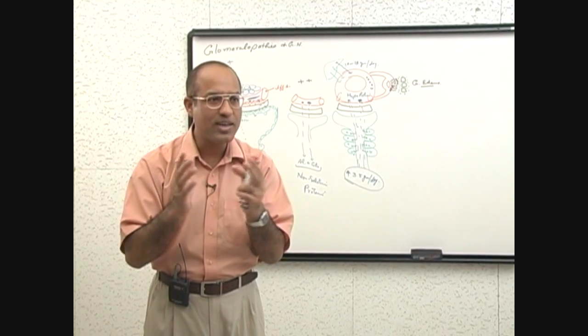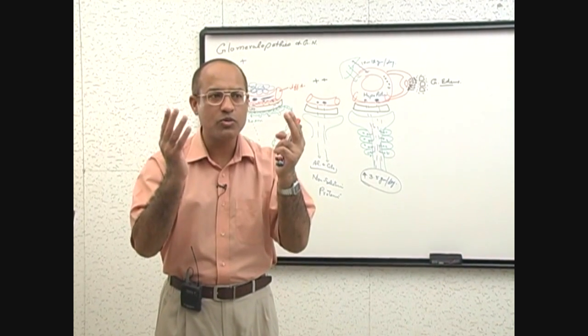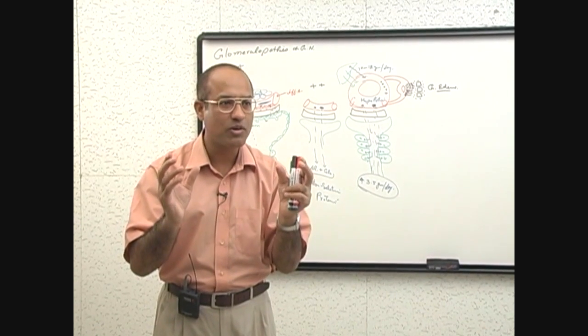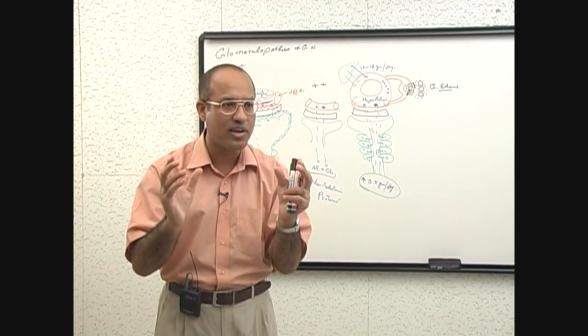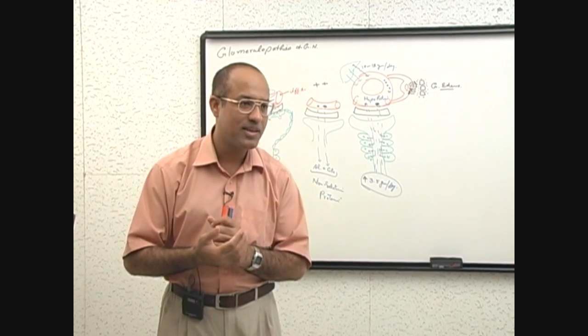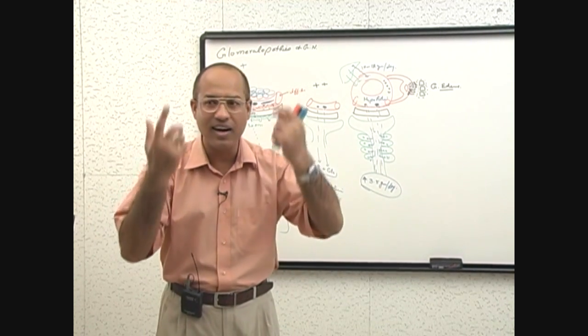So when capillaries leak here, fluid comes out but because this tissue will move forward, it will accommodate the extra fluid. It will accommodate extra edema fluid without raising the local pressure. So more fluid will come, and this area will become edematous earlier.